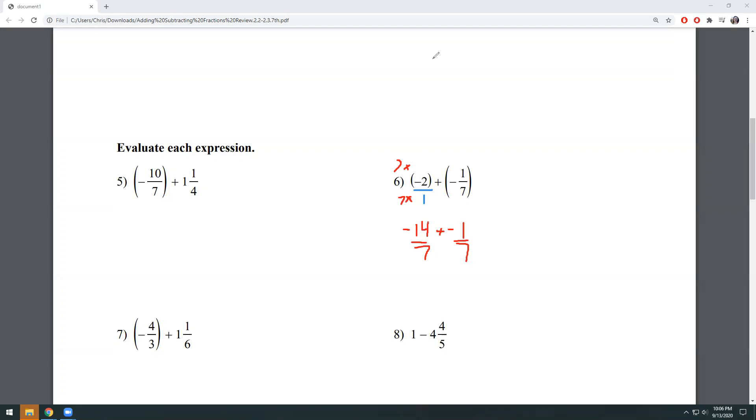My third step is adding or subtracting my numerators. So I've got my numerators right here. I've got a negative 14 plus a negative one. Use your calculator if you're unsure, but you should get negative 15 as your answer. So that tells me when I add those two numbers together, my numerator is going to be a negative 15. My denominator stays the same at seven. And so my answer for number six is negative 15 over seven.